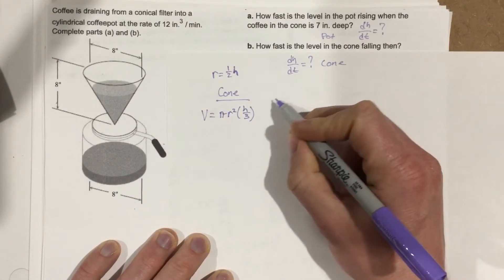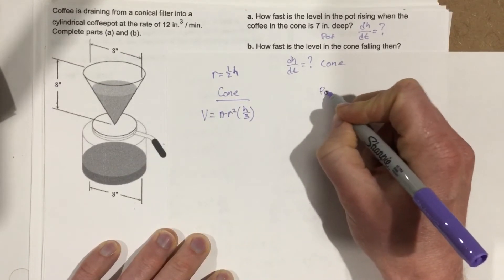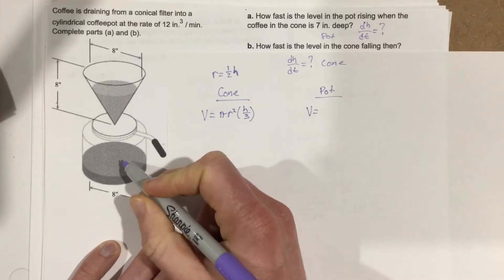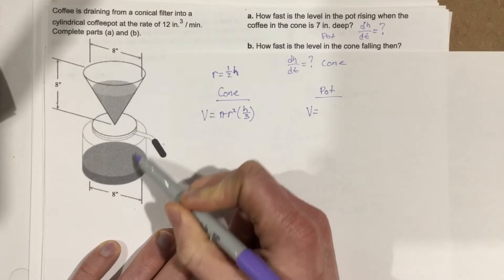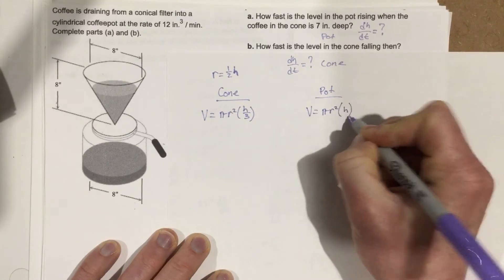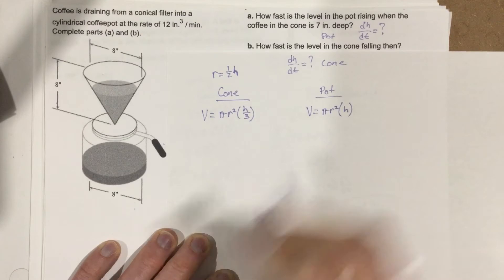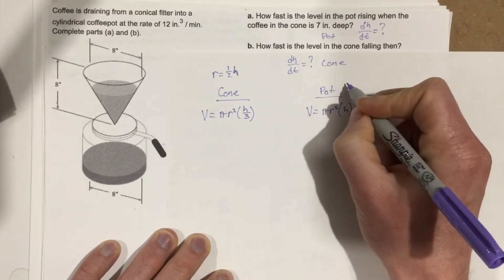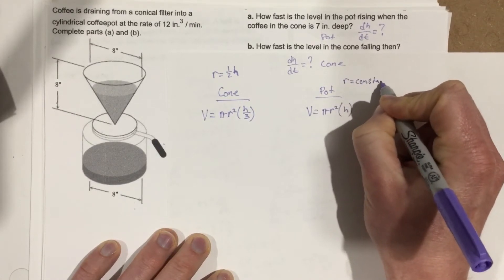For the coffee pot, volume equals πr²h - you have a circle and the height of that circle determines the volume. The thing about the pot is that the radius never changes here. The radius stays eight inches all the time, so r equals a constant, which helps us out for this problem.